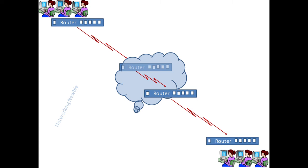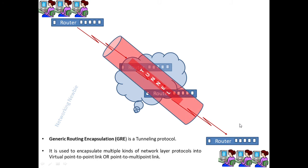As shown in the diagram, there is a public network. The users of those networks are connected with the help of routers and this public network to connect one network with another network. If you want to have some private communication in this case, then we need some kind of protocol — that is called GRE.